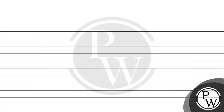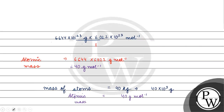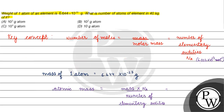If we want to find the number of moles: mass divided by molar mass gives us 40 into 10 raised to the power 3 gram, divided by 40 gram per mole, which equals 1000 moles, i.e., 10 raised to the power 3 gram atom. So the correct answer is Option A. I hope you understood it well — thank you and all the best!